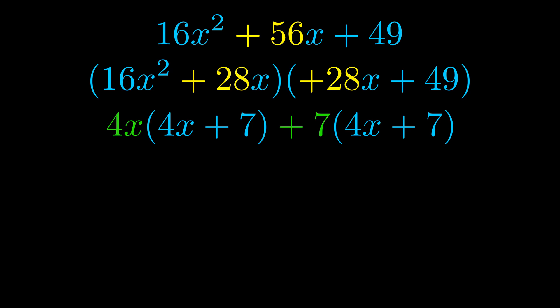Notice also how what remains inside of the parentheses is the same in both cases. The blue values are the same. Those blue values will become one of our factors and we will combine the two green values, the GCFs that we pulled out, to get the other one. And that is our fully factored equation.